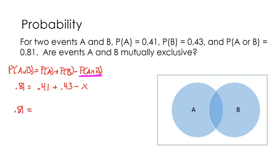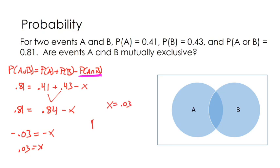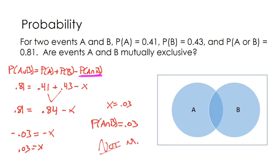Let's do a little algebra. I combine like terms and then subtract 0.84 from each side, then divide both sides by negative 1. What we just figured out is that X equals 0.03. We defined X as the probability of A and B, and that's 0.03 — a 3% chance of both A and B happening. Because of that, these events are not mutually exclusive.